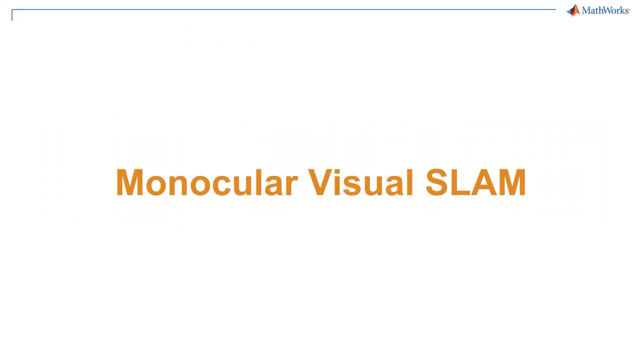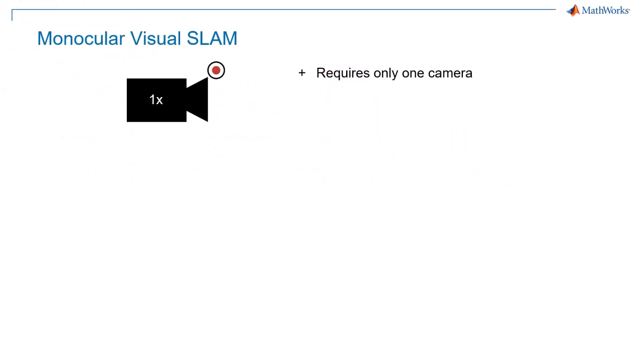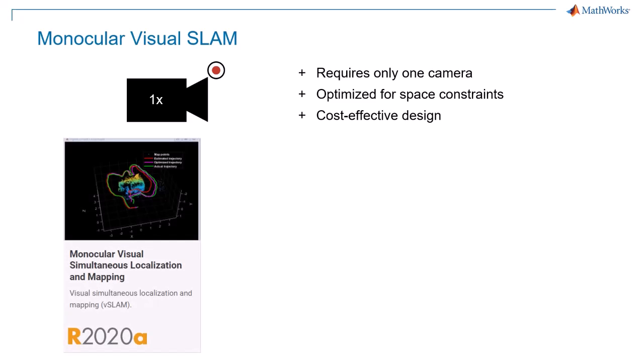Within Visual SLAM, one specific approach is Monocular SLAM. Monocular refers to the use of a single camera to capture all the visual data needed for localization and mapping. Implementing Visual SLAM with a monocular camera is particularly appealing due to its compact hardware and cost-effectiveness, making it perfect for applications with size or budget constraints. An example of monocular applications was first introduced in R2020A.